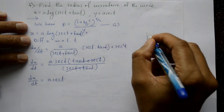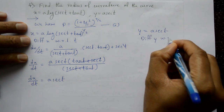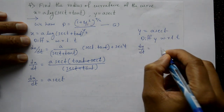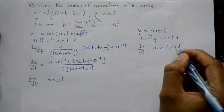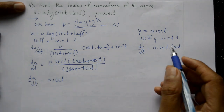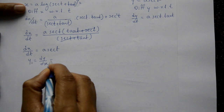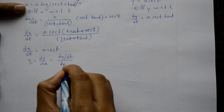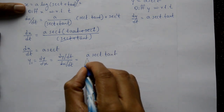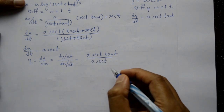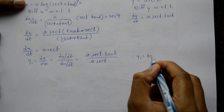For y = a·sec t, differentiate with respect to t: dy/dt = a·sec t·tan t. Now to find y₁ = dy/dx = (dy/dt) / (dx/dt) = (a·sec t·tan t) / (a·sec t). The a and sec t cancel, leaving y₁ = tan t.